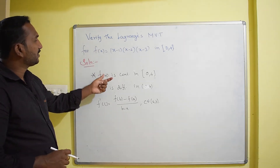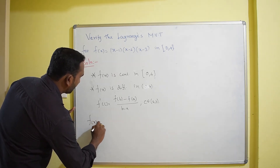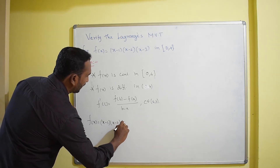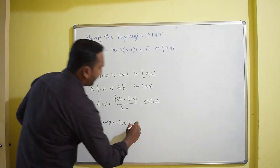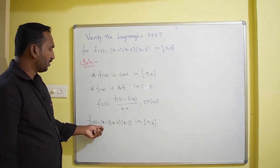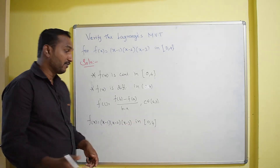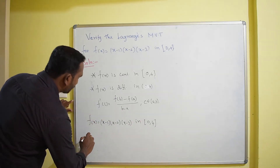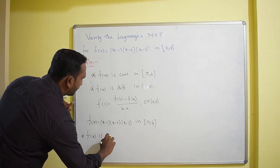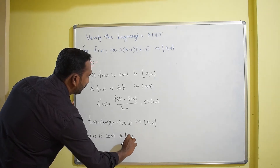The first condition is that the given function should be continuous. The given function is f(x) = (x-1)(x-2)(x-3) on the closed interval [0,4]. If you substitute 0 you get a finite value, and if you apply 4 you again get a finite value. Therefore, the given function f(x) is continuous on the closed interval [0,4].